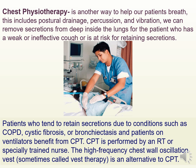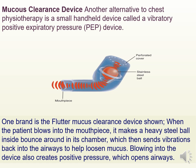CPT is generally performed by a respiratory therapist or a specially trained nurse. Sometimes a vest therapy or chest vest is used as an alternative — it can oscillate or vibrate the chest wall to help loosen and remove secretions. Another alternative is a small handheld PEP device, or vibratory positive expiratory device — one brand is the flutter mucus clearance device. The patient blows into the mouthpiece; a heavy steel ball bouncing in the chamber sends vibrations into the airway to loosen mucus. Blowing into the device also creates positive pressure to open the airways.